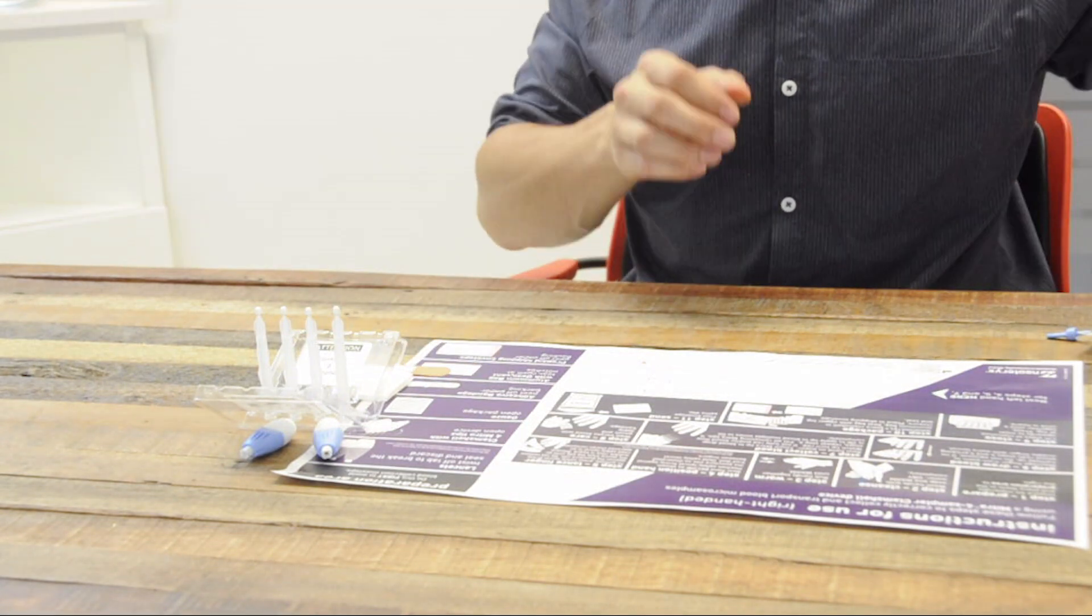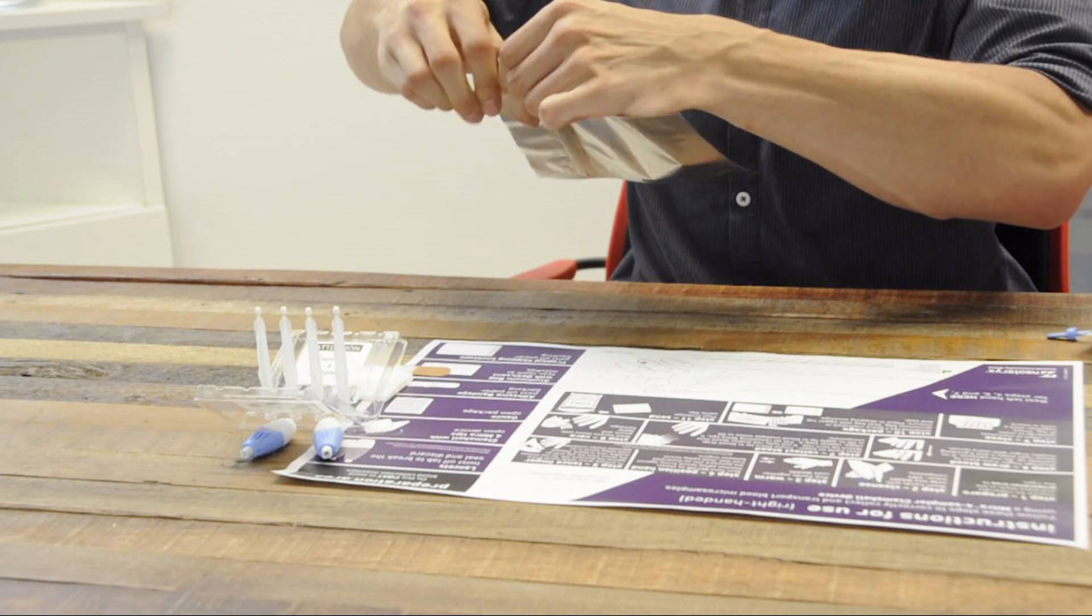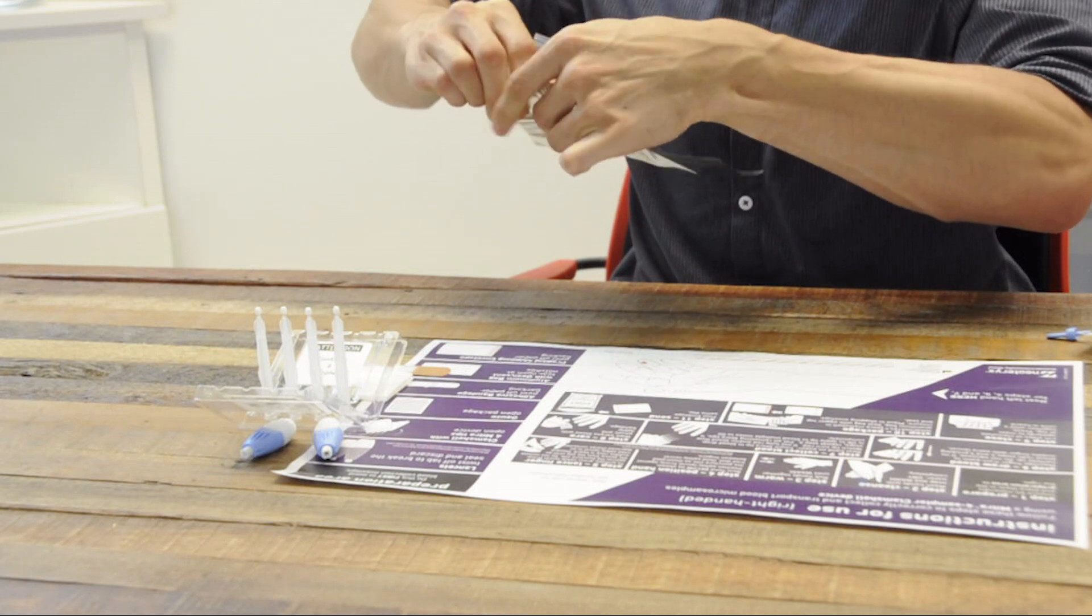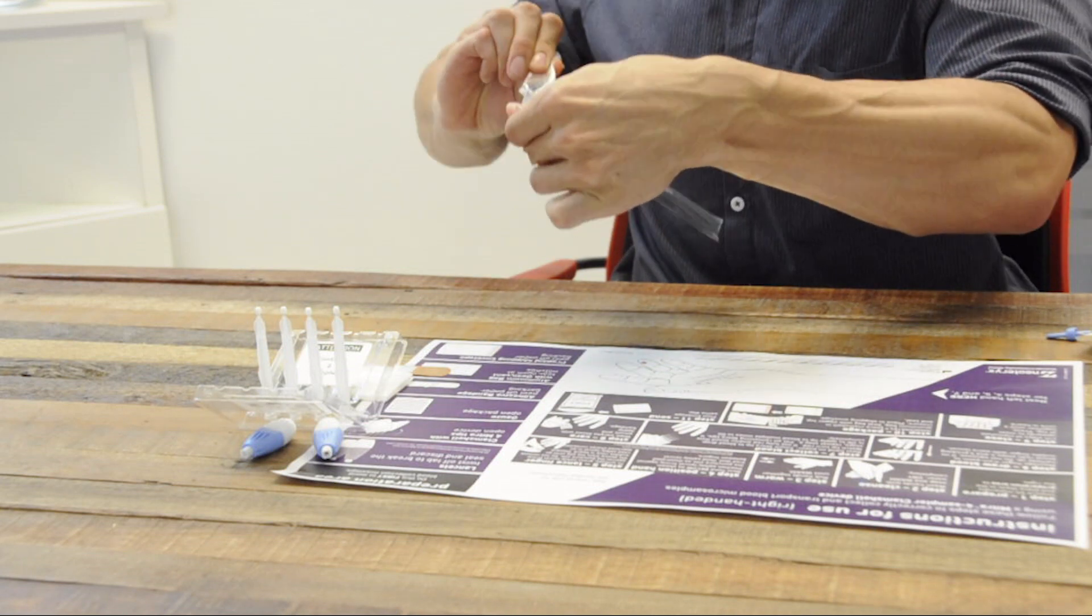Prepare the aluminum bag and desiccant. Peel away the paper backing to expose the adhesive strip and place the bag within your reach.